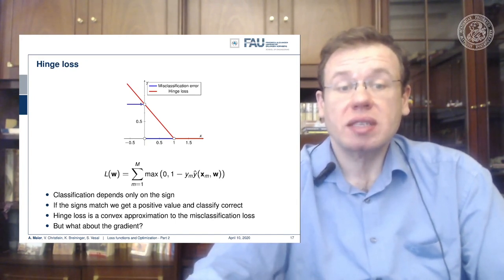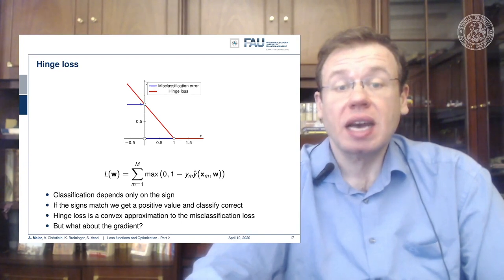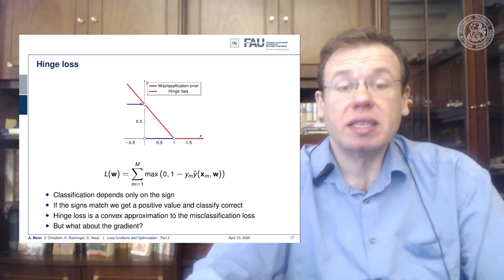Now with the hinge loss, we can relax this 0-1 function into something that behaves linearly on a large domain. The idea is that we essentially use a line that hits the x-axis at one and the y-axis also at one, and if we do it this way then we can simply rewrite this using the max function.